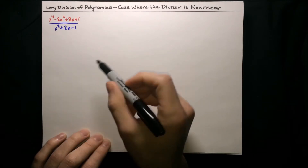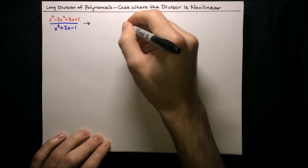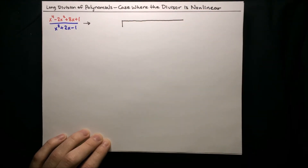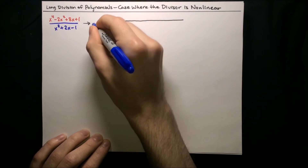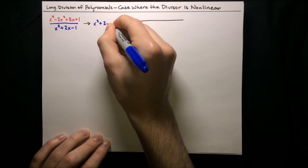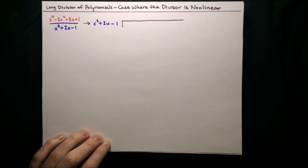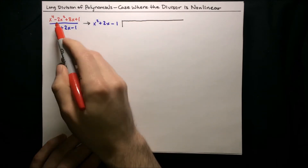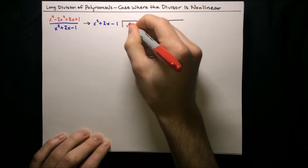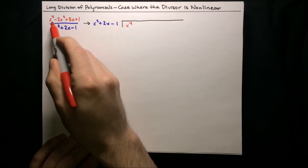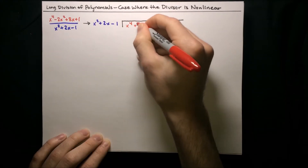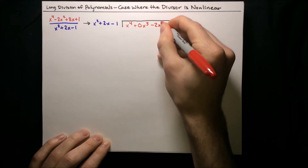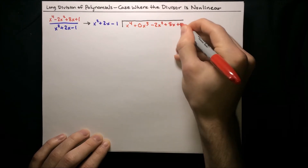To start off, it's going to be a really similar setup to what we've seen. Let's make a long division diagram and put the divisor on the outside as usual. So x squared plus 2x minus 1 goes on the outside, and then on the inside we'll put in the dividend. Remember that we have to write down all the zero coefficients. So we've got an x to the fourth, but then there's no x to the third term, so x to the fourth plus zero x to the third, then negative 2x squared plus 8x plus 1.